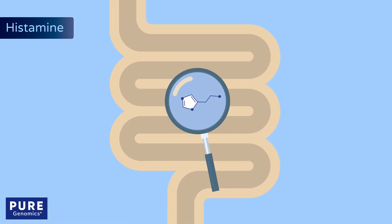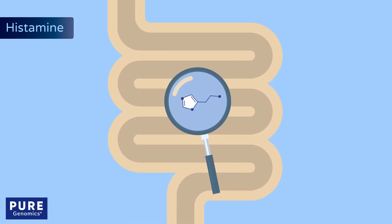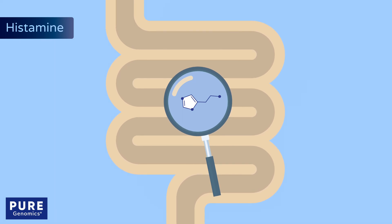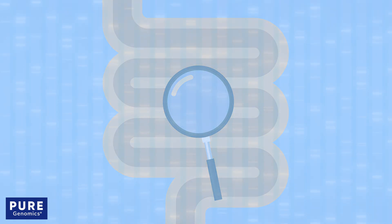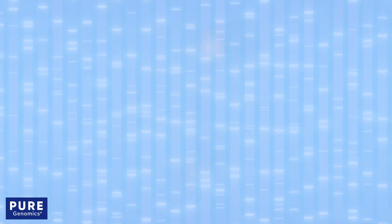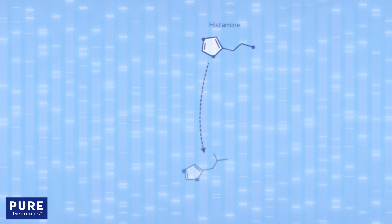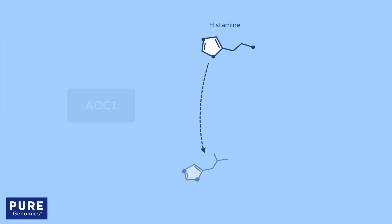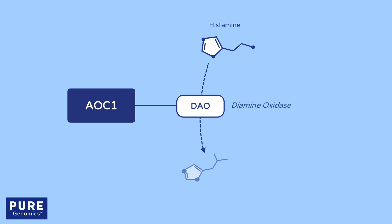Some individuals have difficulty breaking down histamine they consume through food. One of the genes required for the degradation of histamine is called AOC1, which codes for an intestinal enzyme called DAO or diamine oxidase. A variation in this gene encodes a form of DAO that may not function as well.